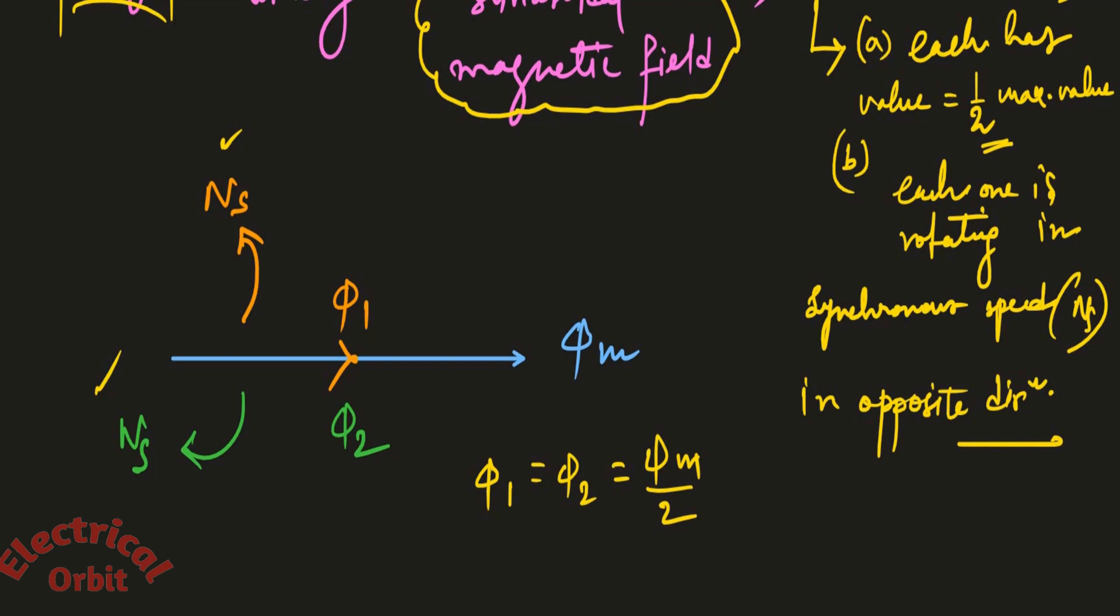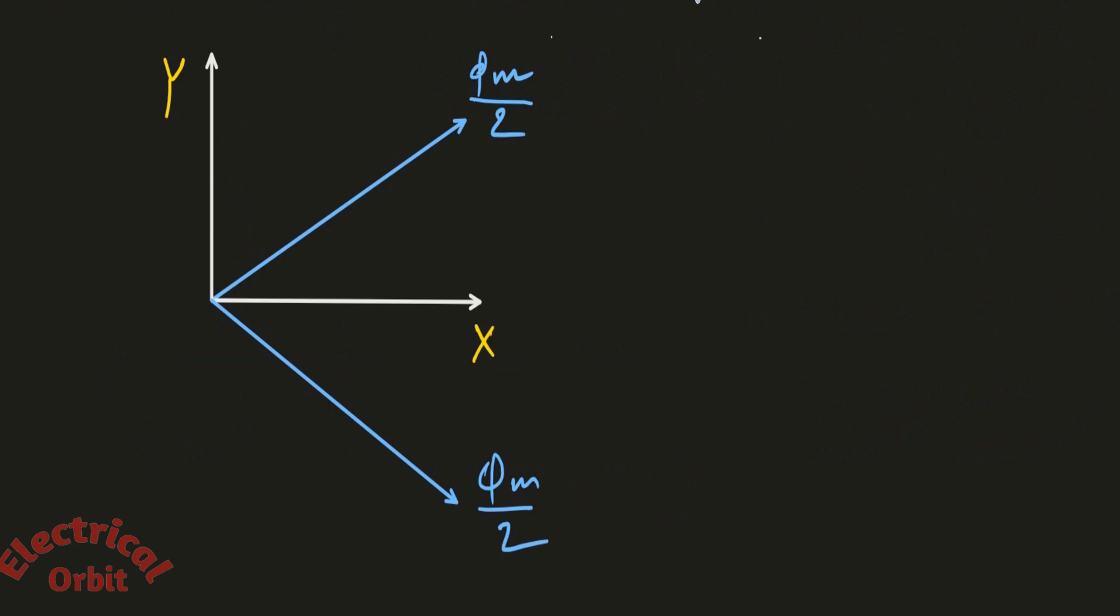Now if we divide Φ_M into horizontal x-axis and vertical y-axis, then we will get suppose this is Φ_1 and this is Φ_2 that I have explained earlier, which are equal in value and rotating in opposite direction to each other with a speed ω that you consider as synchronous speed. I am saying these things in order to give you the mathematical expression of the vectors that we will try to deduce through this pattern. So this angle is ωt, this angle is also ωt.